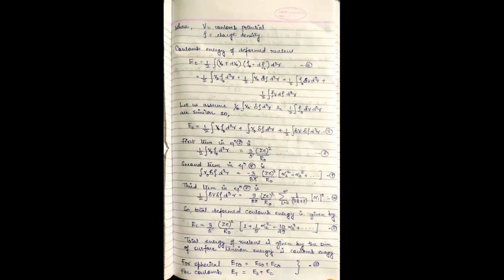Now let us assume that 1 by 2 integral V naught del rho d cube R and 1 by 2 integral rho naught del V d cube R are very similar. Hence, the above equation can be written as EC equals 1 by 2 integral V naught rho d cube R plus integral V naught del rho d cube R. This is equation 7.